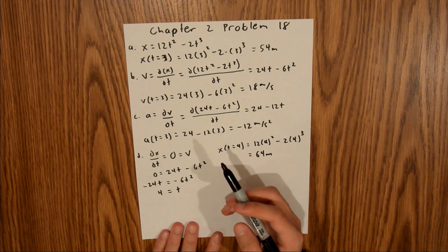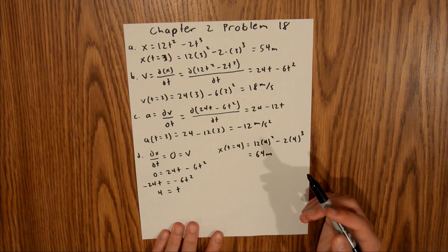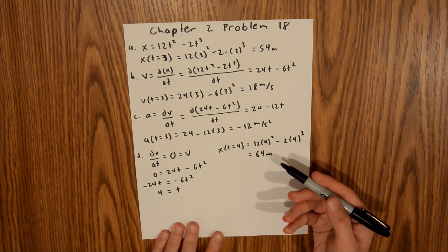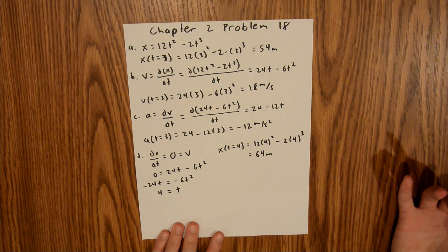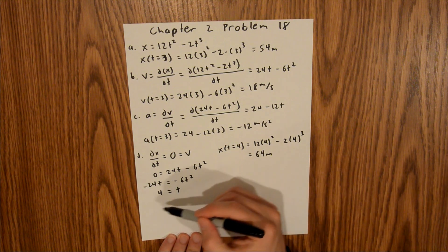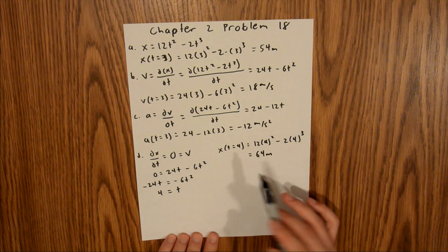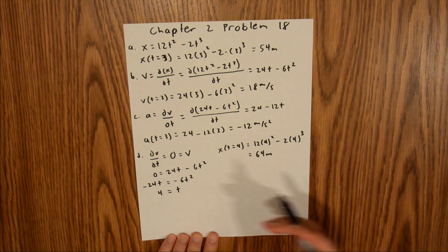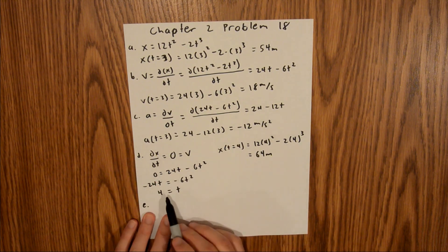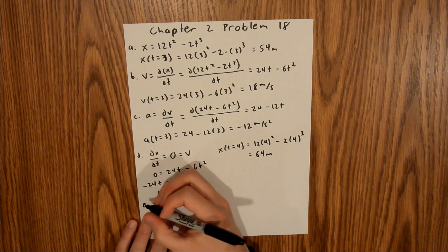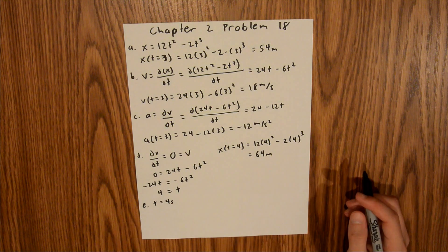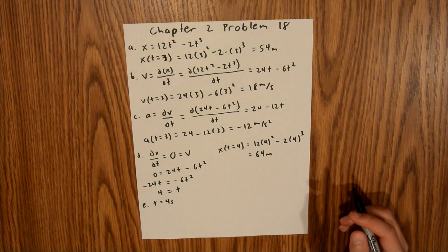For part E, we are asked to find at what time the maximum positive coordinate occurs. That's actually a bit out of order since we had to find it before solving part D. The answer is time equals 4 seconds.